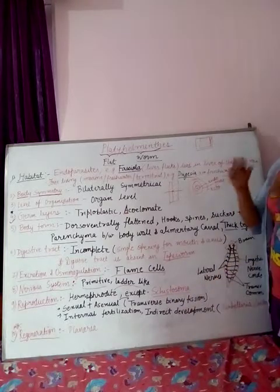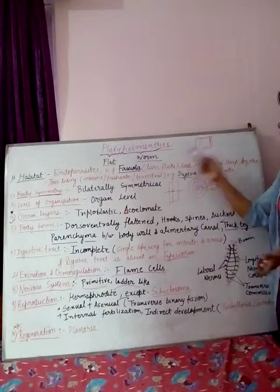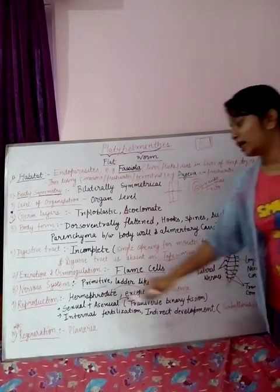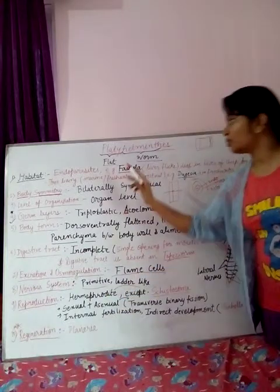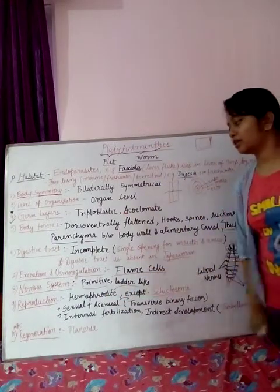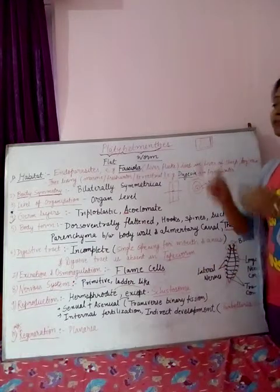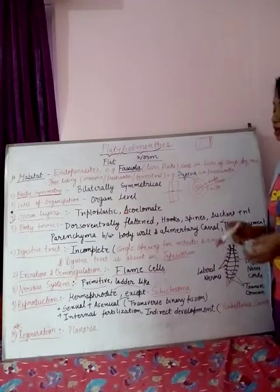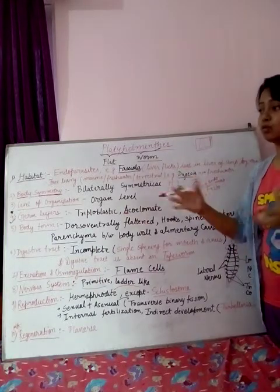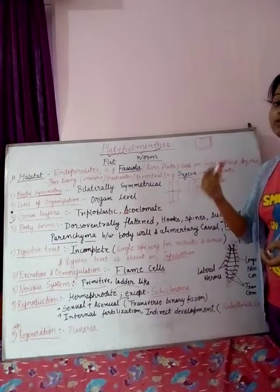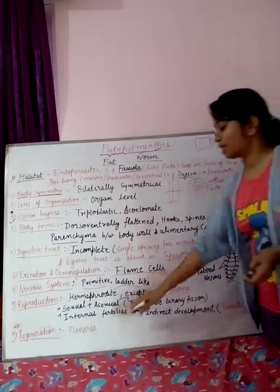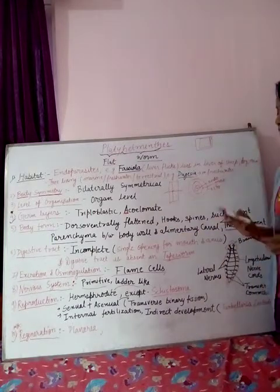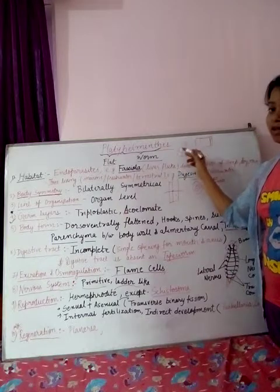Indirect development means the development has a larval form. Common larval forms in Platyhelminthes include miracidium, cercaria, and trematoda larvae. The most important feature of Platyhelminthes is regeneration — if any body part gets cut, they can regenerate it well, growing a fully formed organ in a very short period of time. Planaria especially possesses this feature of regeneration tremendously, and it is the most special feature of Platyhelminthes.